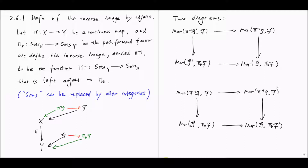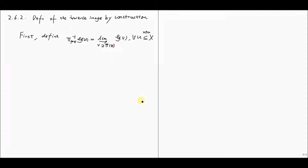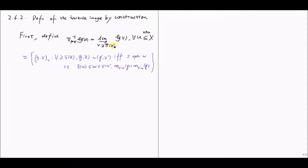So now we give the second definition of the inverse image sheaf by direct construction, done in two steps. First, for any open subset U of X, we define π pre-inverse of G over U to be the colimit of G(V) over all open sets V containing π(U). Note that π(U) is not necessarily an open set, but those V's are all open subsets. Using the set-theoretic interpretation of colimits, we can explicitly write this definition as a set of equivalence classes.